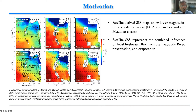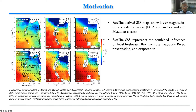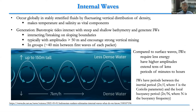We now have salinity estimates from SMOS, Aquarius, and SMAP, which we can use to understand the role of freshwater fluxes on internal waves. In general, internal waves occur globally in stably stratified fluids by fluctuating vertical distribution of density, making temperature and salinity the vital components.